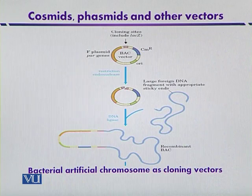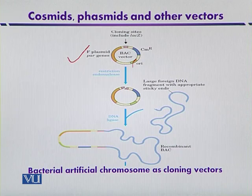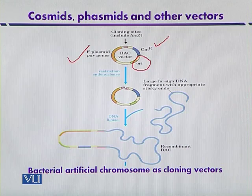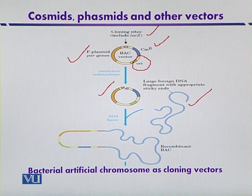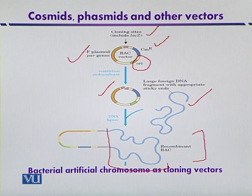The next diagram indicates the cloning procedure with BACs. As mentioned, bacterial artificial chromosomes contain a par region from F plasmid, a region of replication, resistance genes to chloramphenicol, and a cloning site included within the LacZ gene which synthesizes beta-galactosidase. The BAC is digested with an appropriate restriction enzyme to produce cohesive ends, and the foreign DNA is also digested to produce cohesive ends. They are then ligated together so that recombinant bacterial artificial chromosomes are produced, allowing insertion of larger DNA fragments up to 300 kilobases in size.